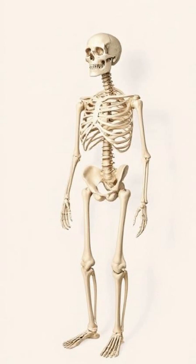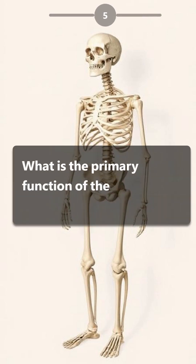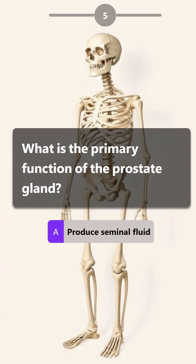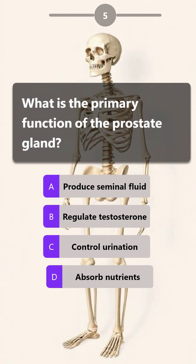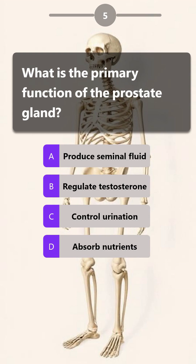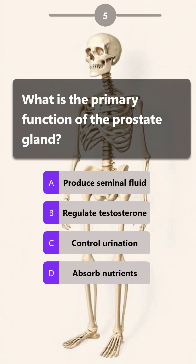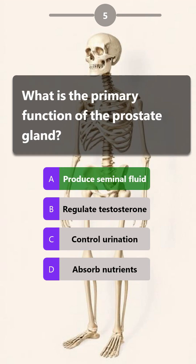What is the primary function of the prostate gland? Produce seminal fluid, regulate testosterone, control urination, absorb nutrients. Answer is: produce seminal fluid.